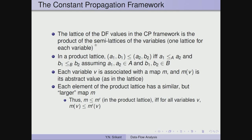The constant propagation framework happens to be a monotone framework, but it is not a distributive framework. When we apply the iterative algorithm for constant propagation we get an approximate value — it cannot catch all the constants in the program; some will be left out. The lattice of data flow values is the product of the semi-lattices of the variables, one lattice for each variable. With two variables we have (a1, b1); with ten variables we have ten components.